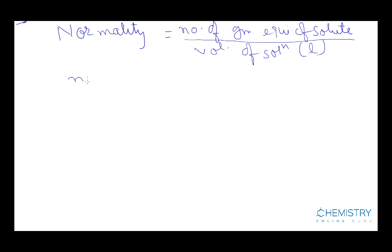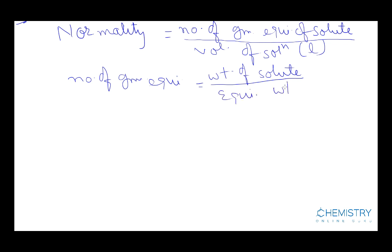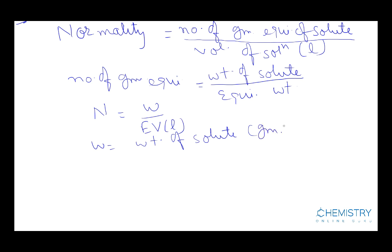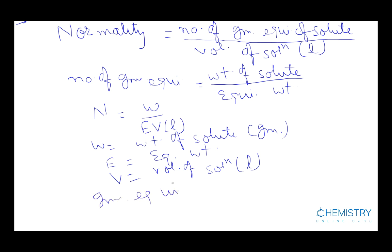We can calculate number of gram equivalents. Its formula is weight of solute divided by equivalent weight. Normality is represented by N. Its formula is N = W / (E × V), where W is the weight of solute in grams, E is the equivalent weight, and V is the volume of solution in litres. The unit of normality is gram equivalent per litre.